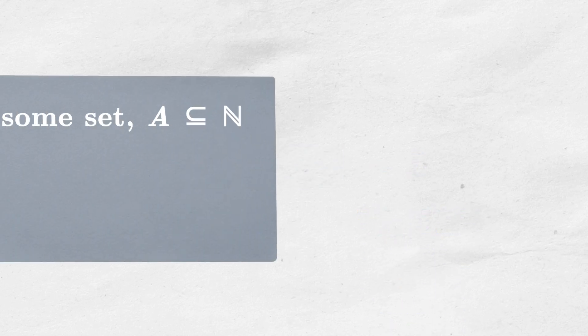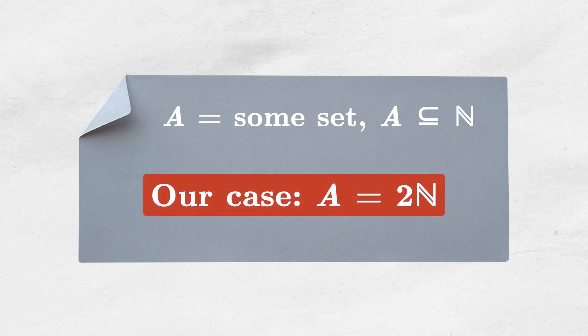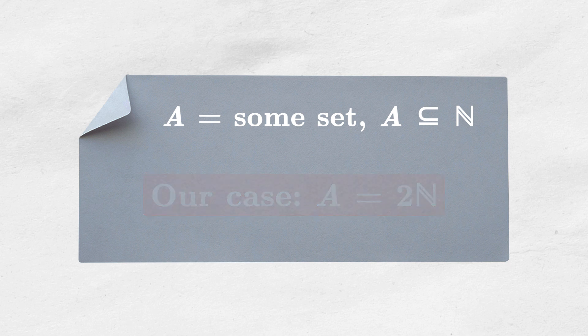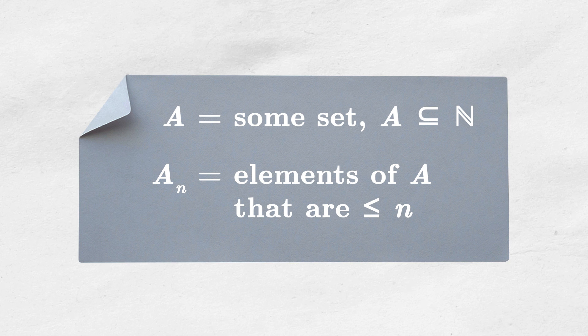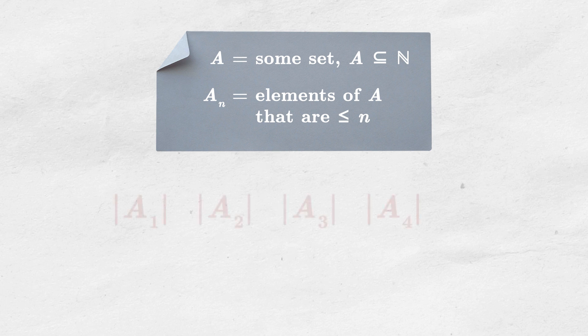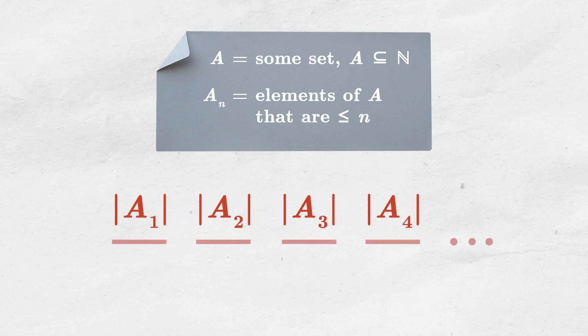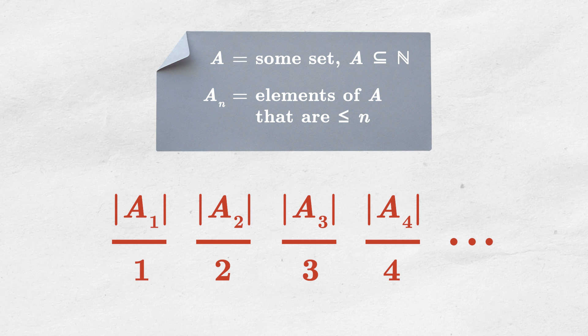Let A denote the set which density we would like to calculate. In our case A will be the set of all even numbers. Now AN will be the set of all elements from A that are smaller than or equal to N. The sequence I've talked about earlier would be the sequence of ratios between the cardinality of AN and the number N. And if the sequence converges to some number, this number would be the asymptotic density of A. Let's take a look at how this sequence behaves in our example.